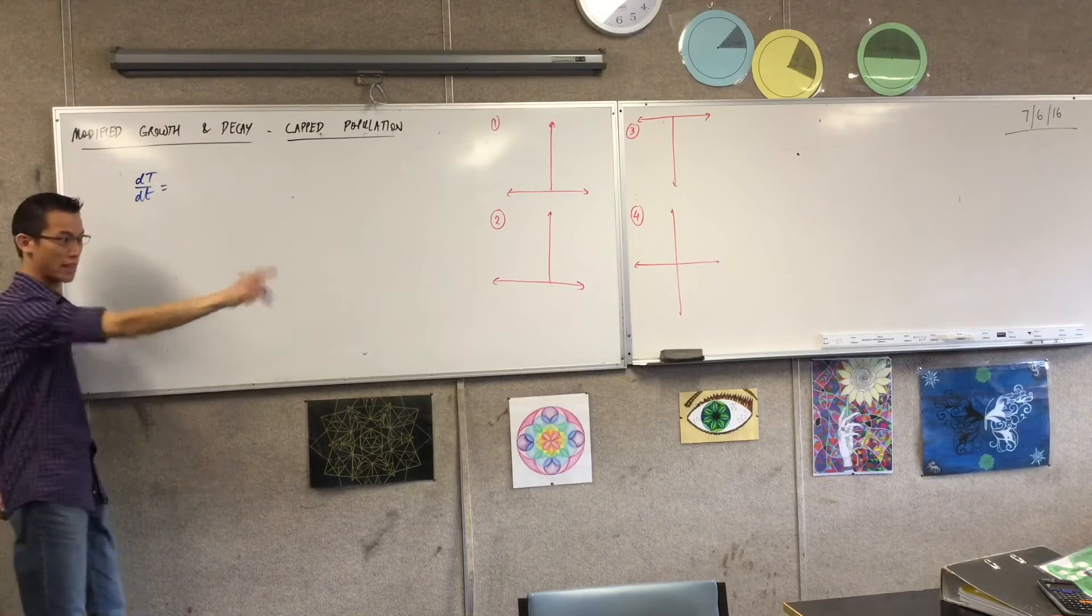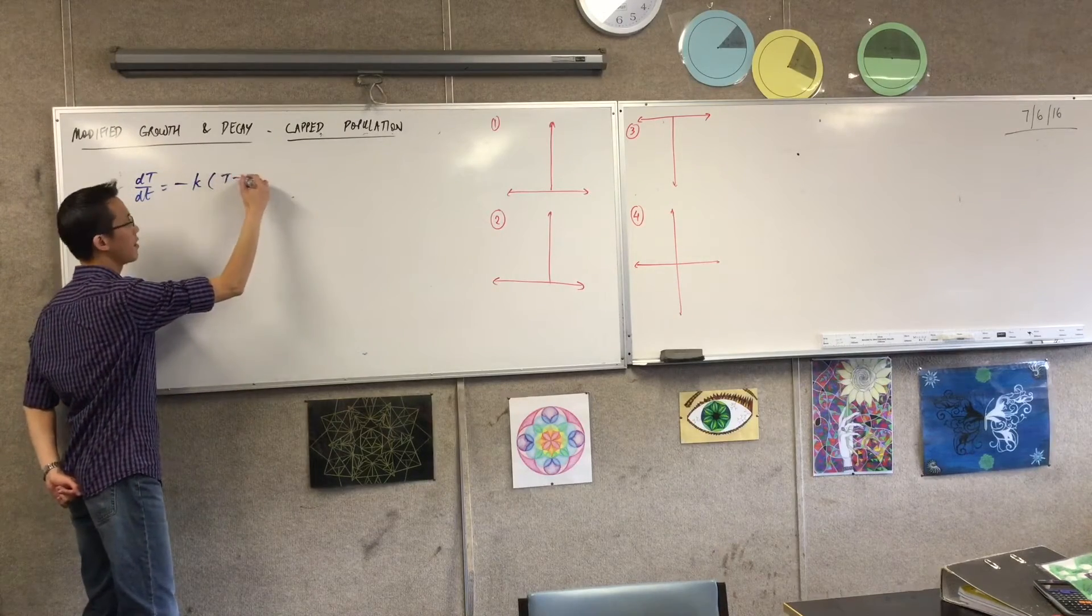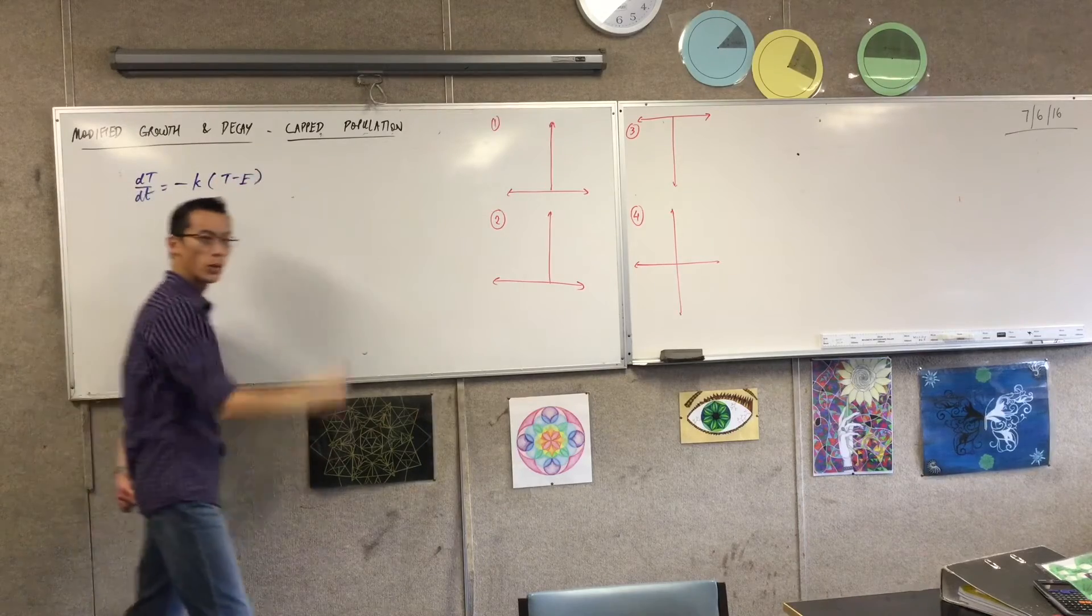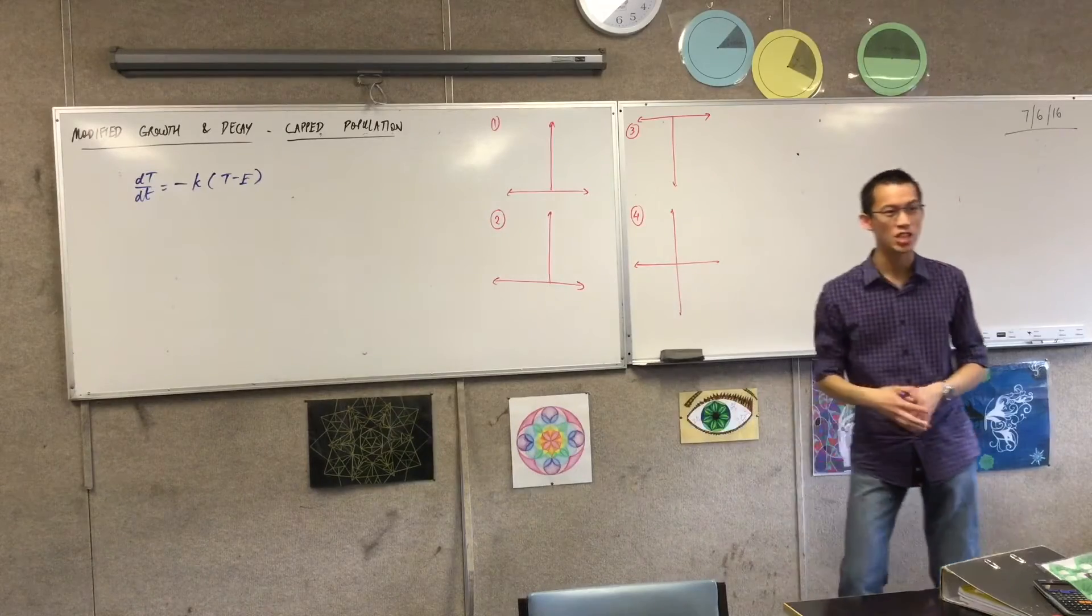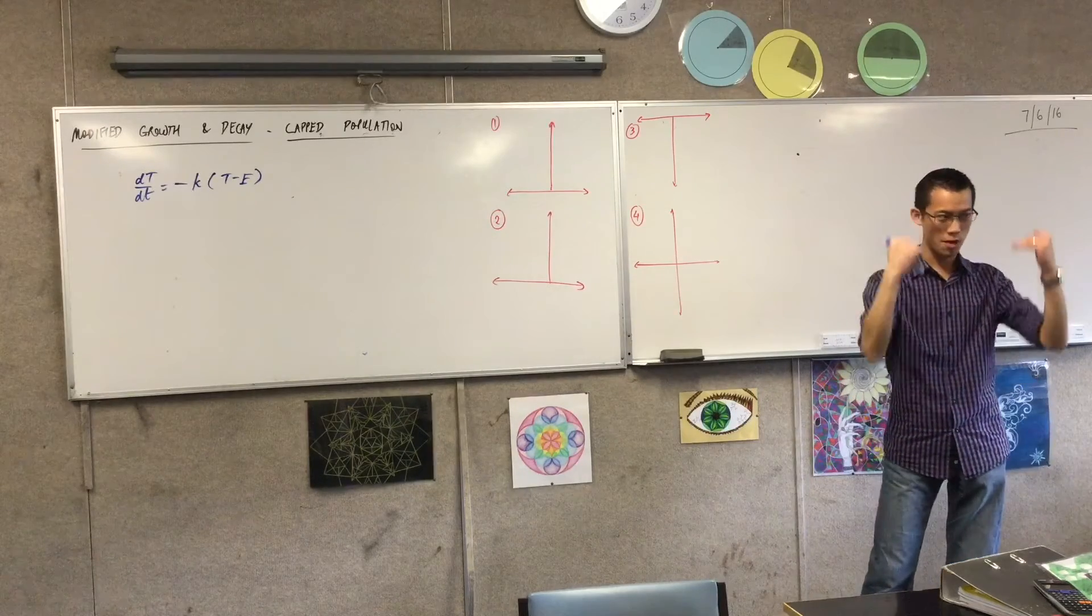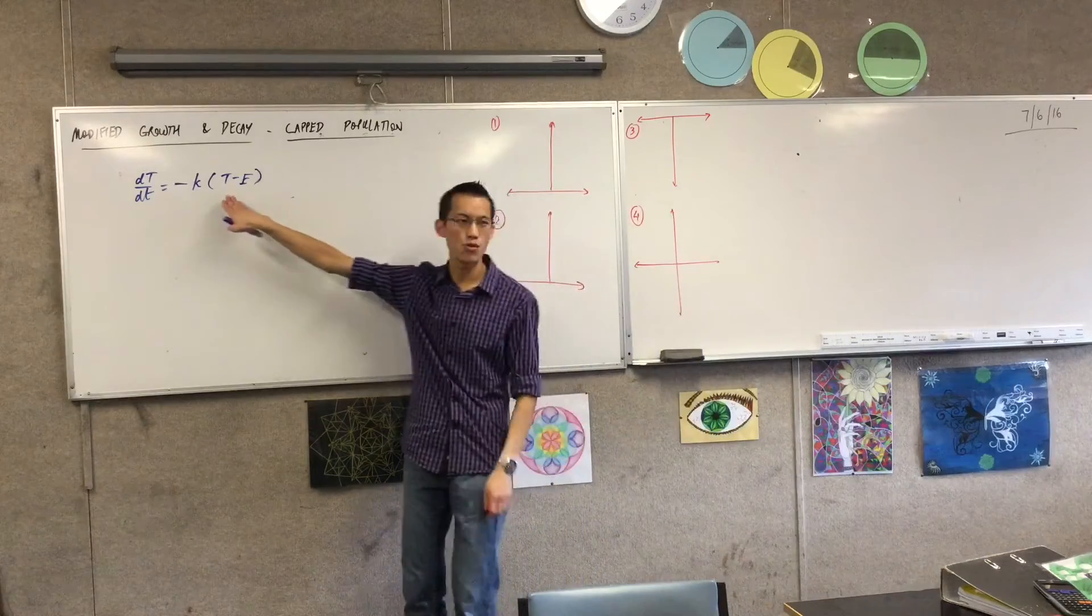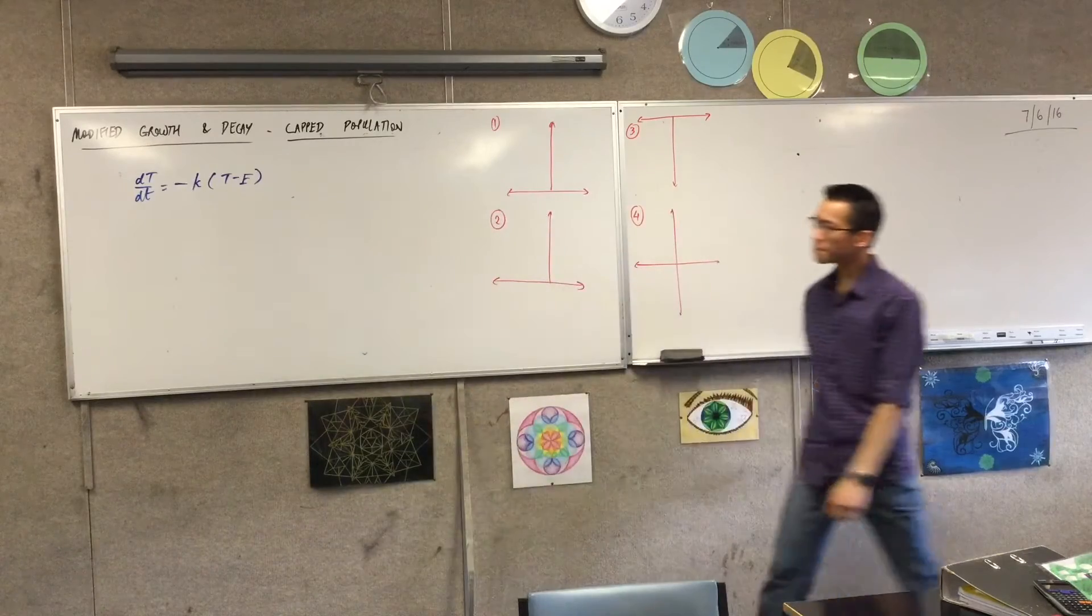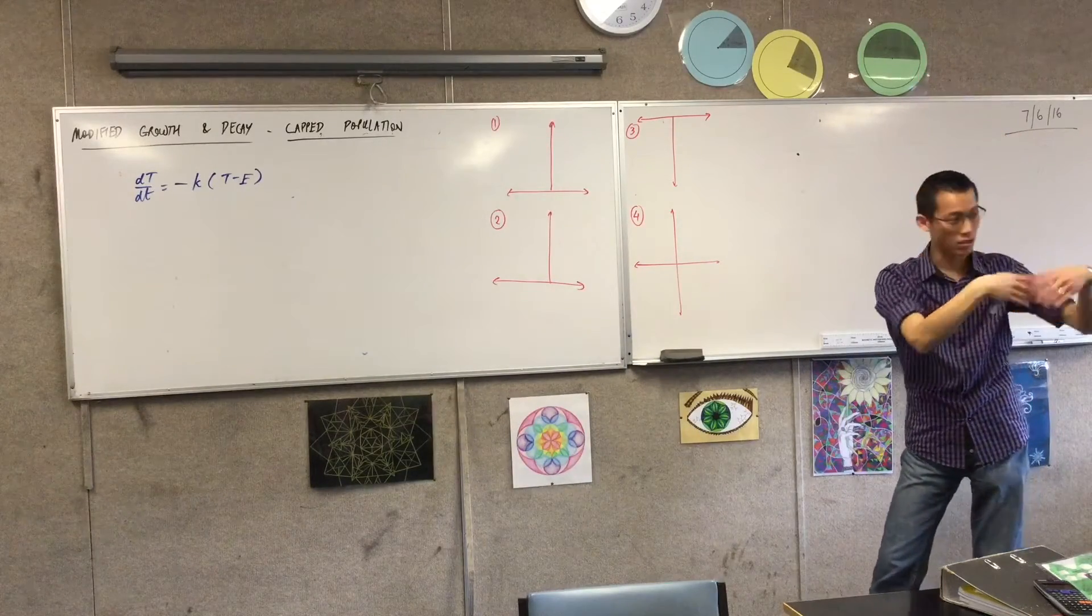First thing, it's cooling, right? So minus. Bracket. E. So we look at this, and we were saying rather than regular decay situation where it's minus kT, it's dropping in proportion to what your temperature is. We're dropping in proportion to the difference between your temperature and the environment's temperature. That's T minus E. Now this talks about when you're decaying and you're going down to a level that's not zero.